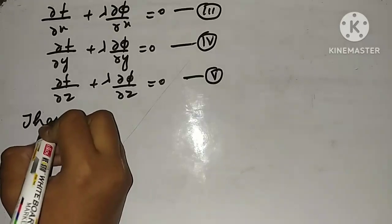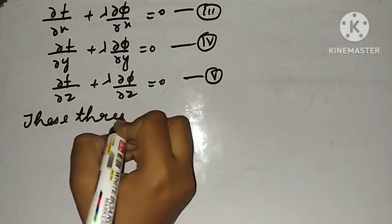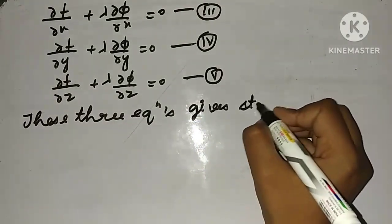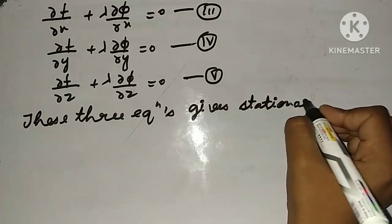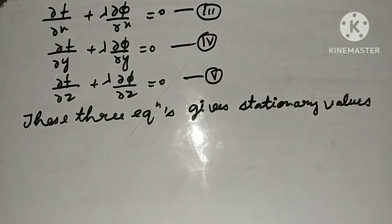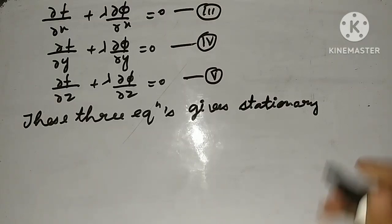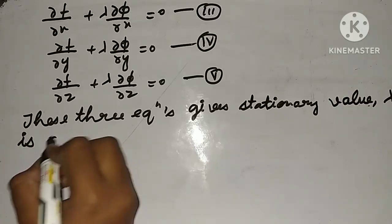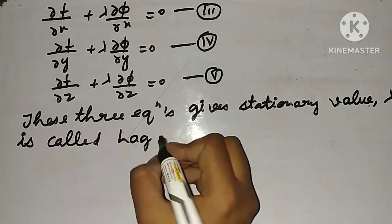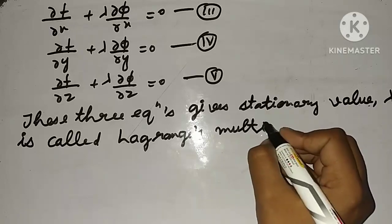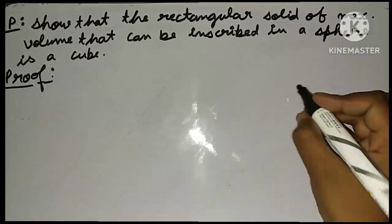These three equations give the stationary values, and λ is called Lagrange's multiplier.